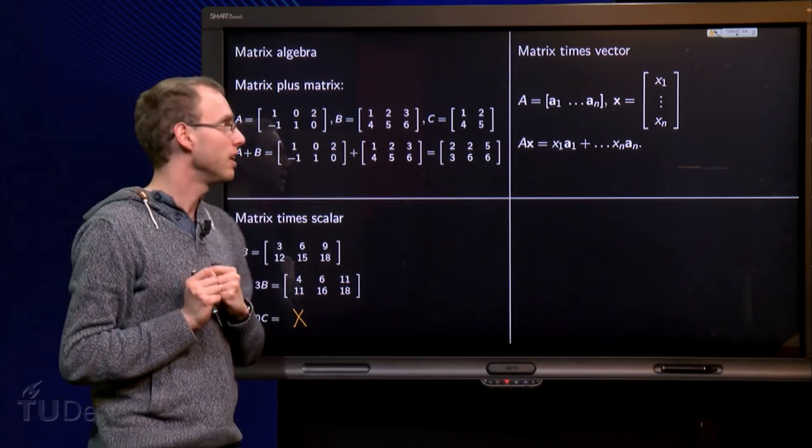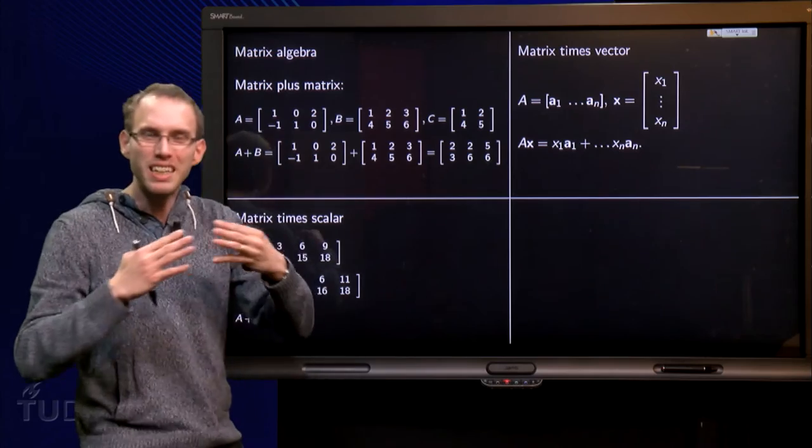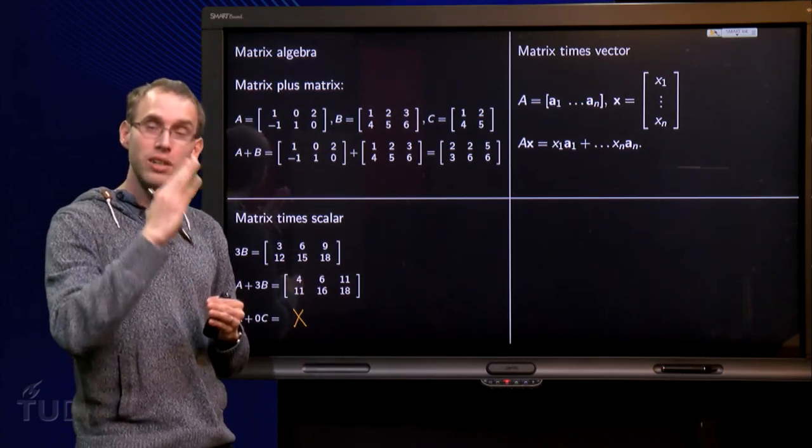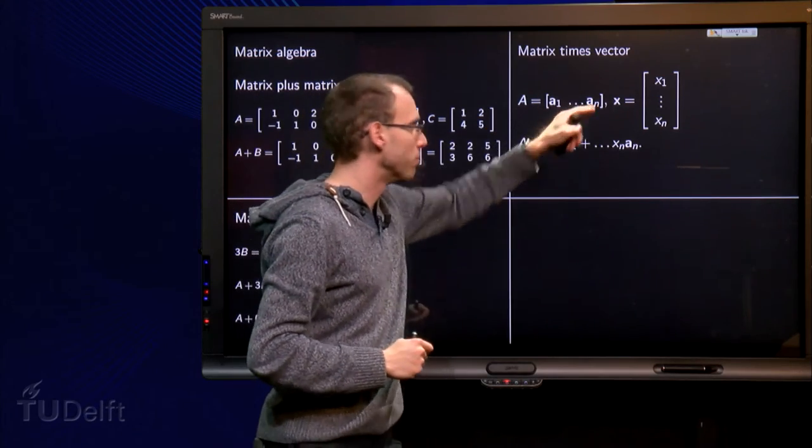Matrix times vector. The next operation. What's most convenient is to write A as a sequence of columns, A1, A2, A3 up to An.